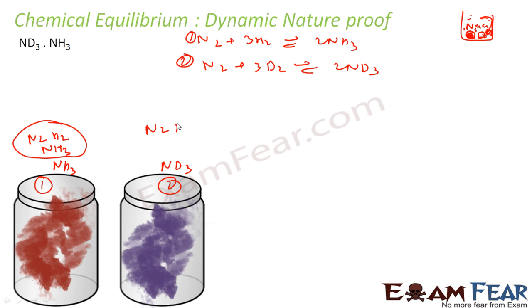Now what I do is I join this. So what happens is gas comes from this, mixes. The gas mixes, and then again the equilibrium is reached. Now since they are already in equilibrium, even if I mix it, it will have N2, H2, NH3 from first and N2, D2, ND3 from second.